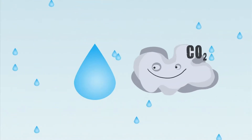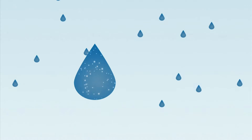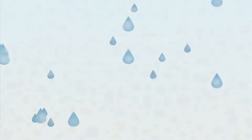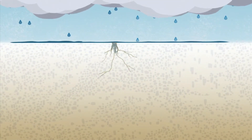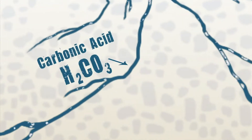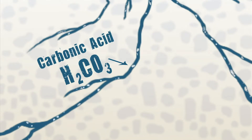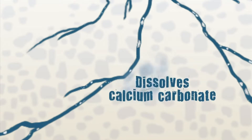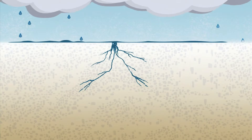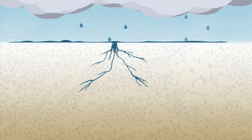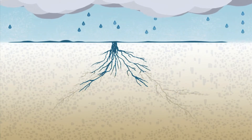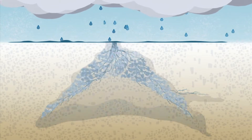Rainwater picks up carbon dioxide as it falls through the atmosphere and as it seeps through the earth. This forms a weak solution of carbonic acid, or carbonated water. Carbonic acid is a solvent for limestone. When it comes in contact with limestone, it dissolves its main mineral component, calcium carbonate. Carbonic acid seeps into every split, fissure joint, and fault, making the cavities larger and larger as the calcium carbonate dissolves.